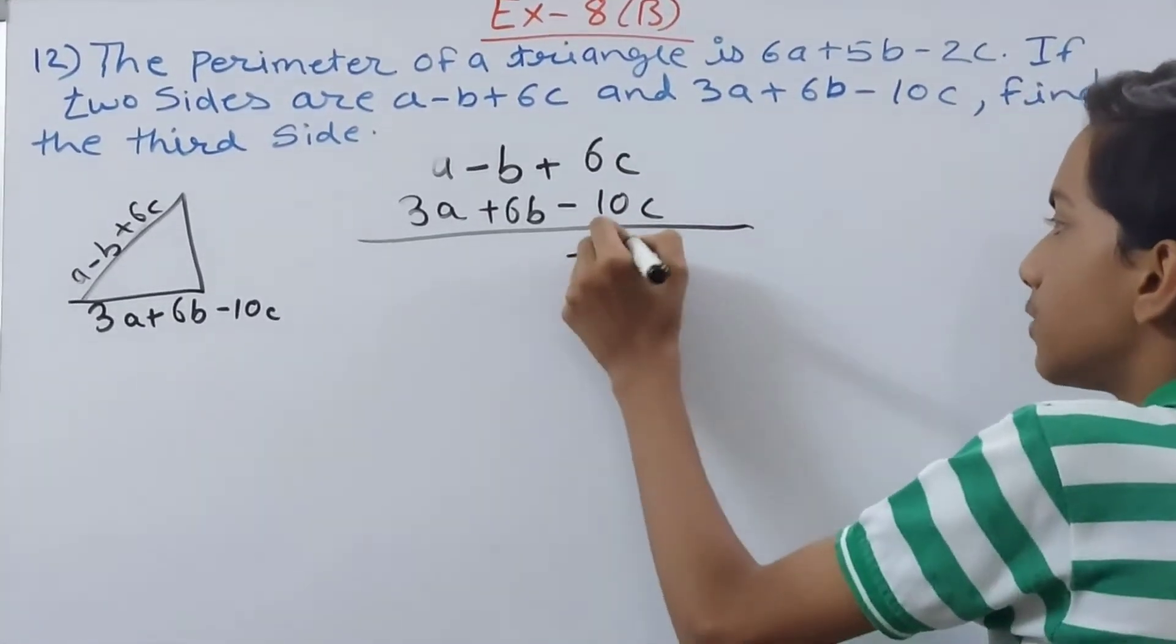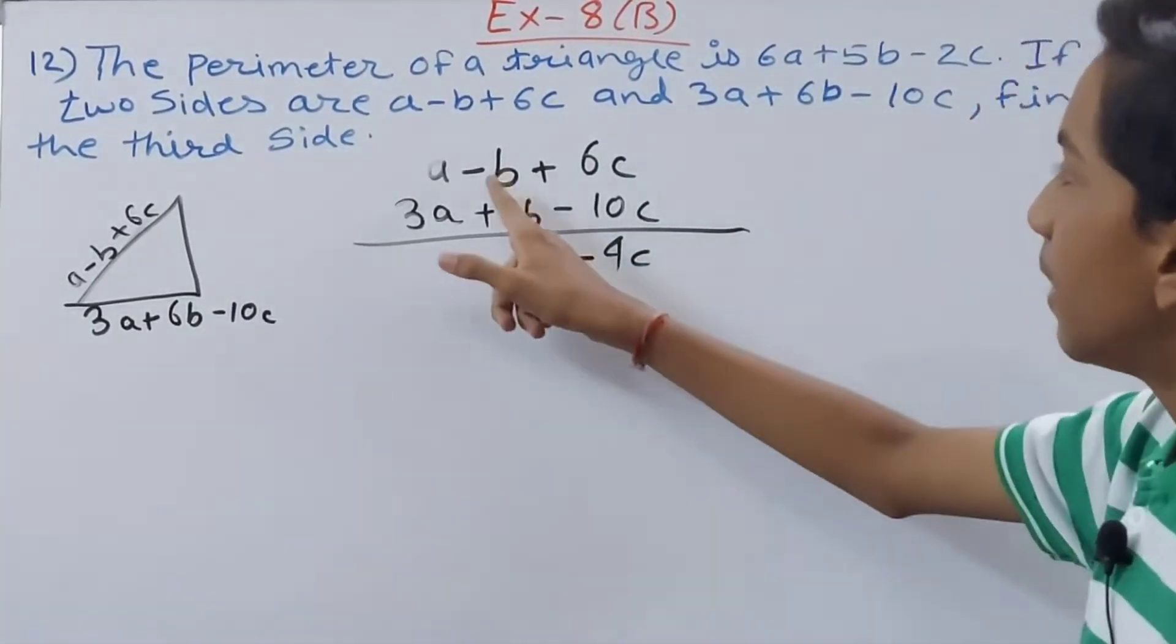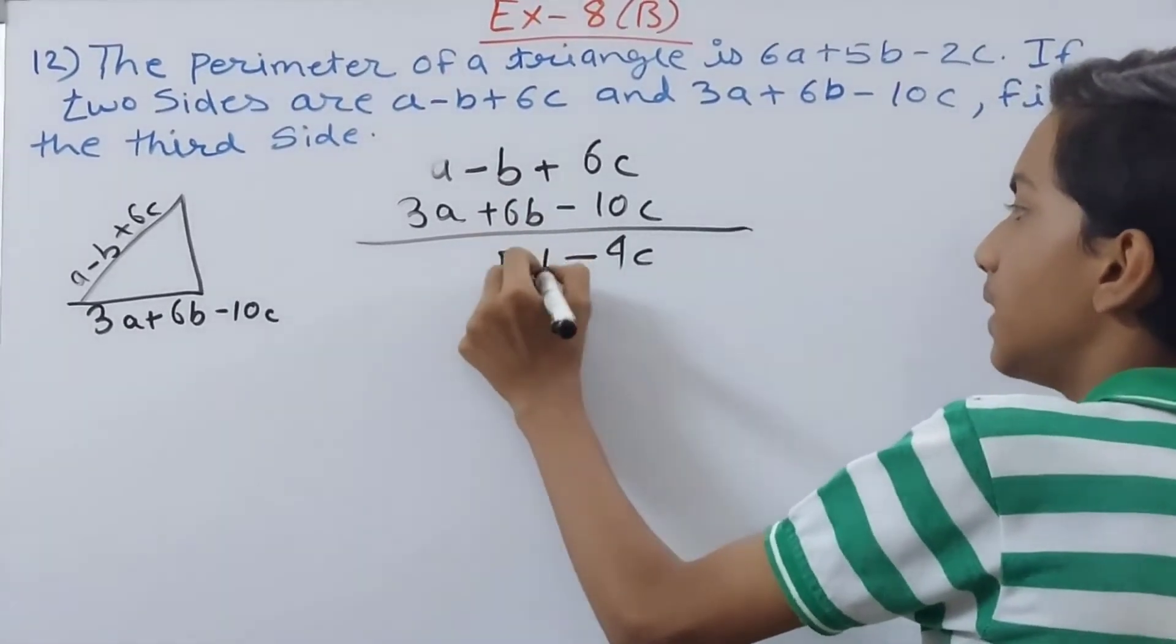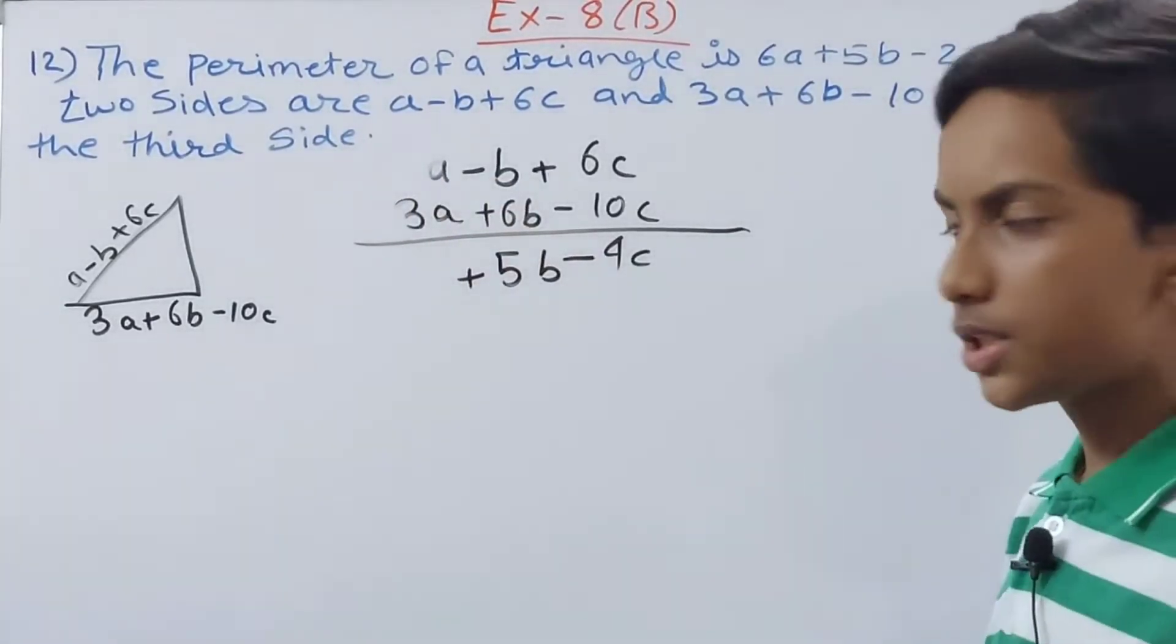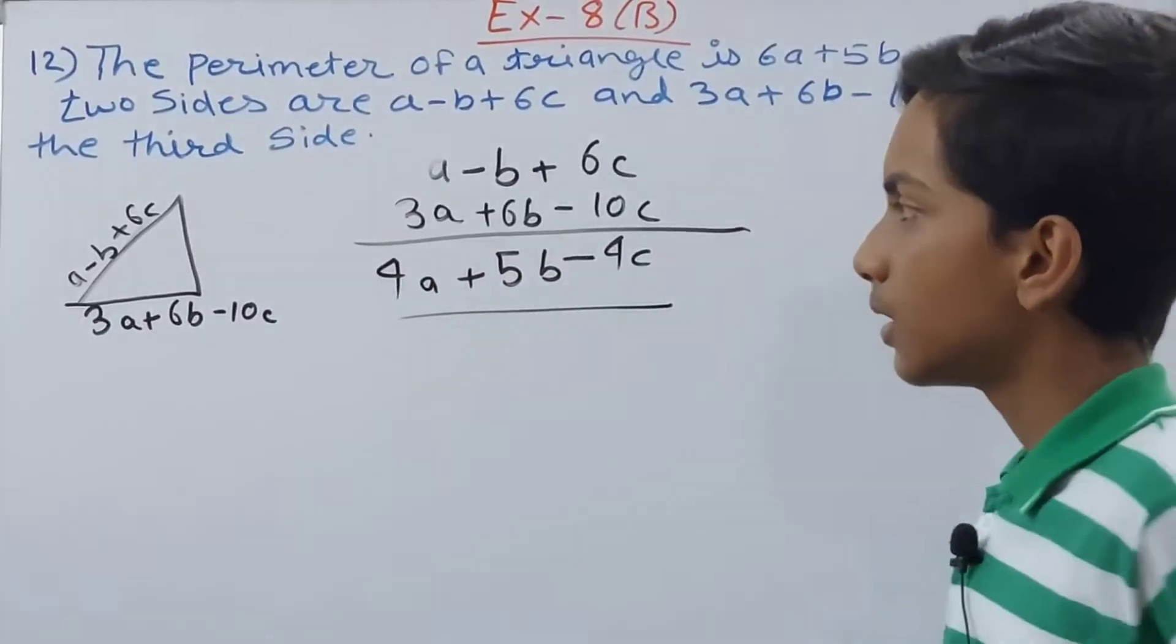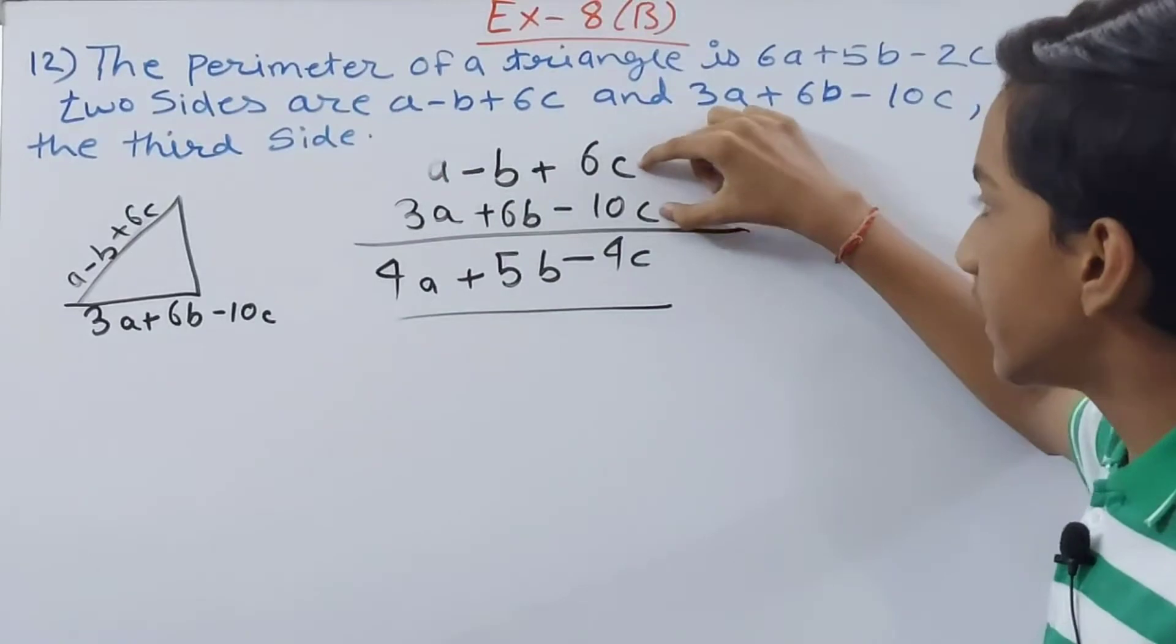So +6c and -10c is going to give us -4c. Then -b and +6b is going to give us 5b. And +a and +3a is going to give us 4a. So 4a + 5b - 4c. This is the sum of the length of both the sides.